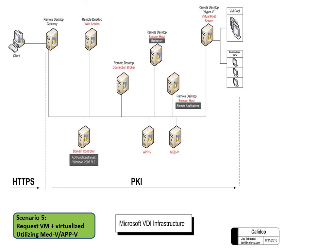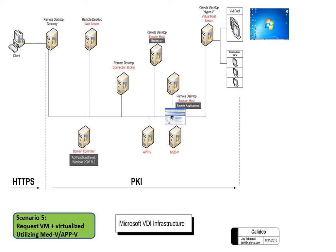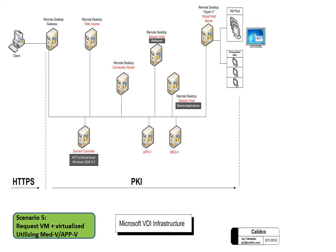Finally, this shows AppV and MedV added to the infrastructure. The client makes a request, goes to the gateway, gets authenticated at the domain controller, goes to Connection Broker, and the Session Host redirects to the virtual host server. A VM pool desktop is initiated, and when that desktop needs a legacy application such as IE6, AppV or MedV merges and delivers that external application to the user.